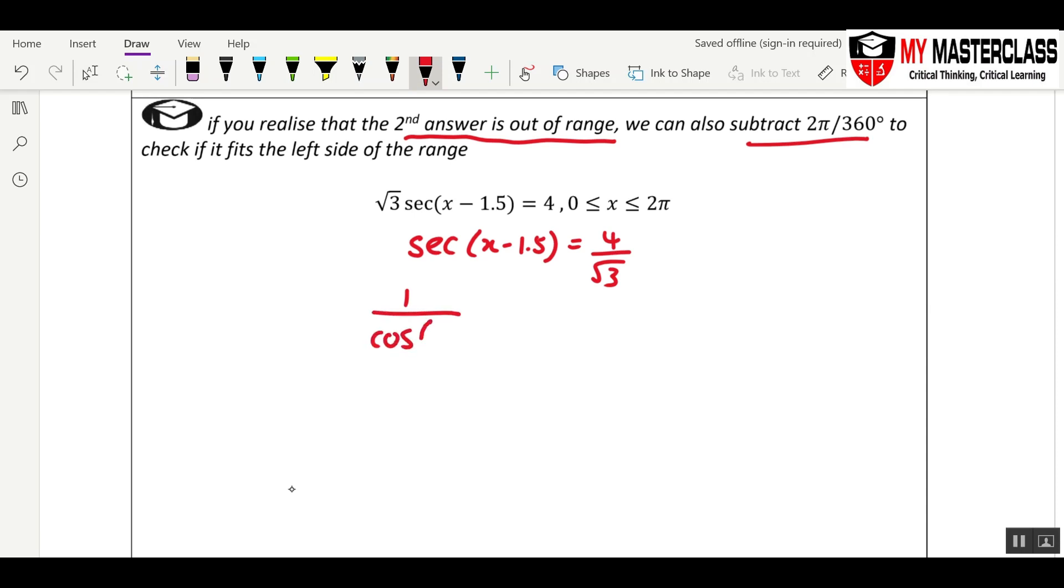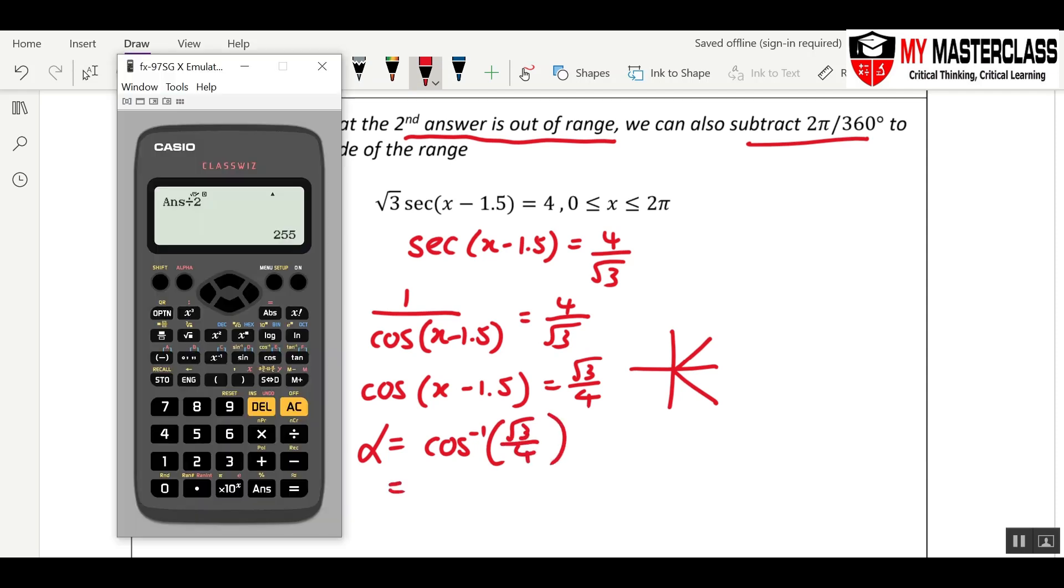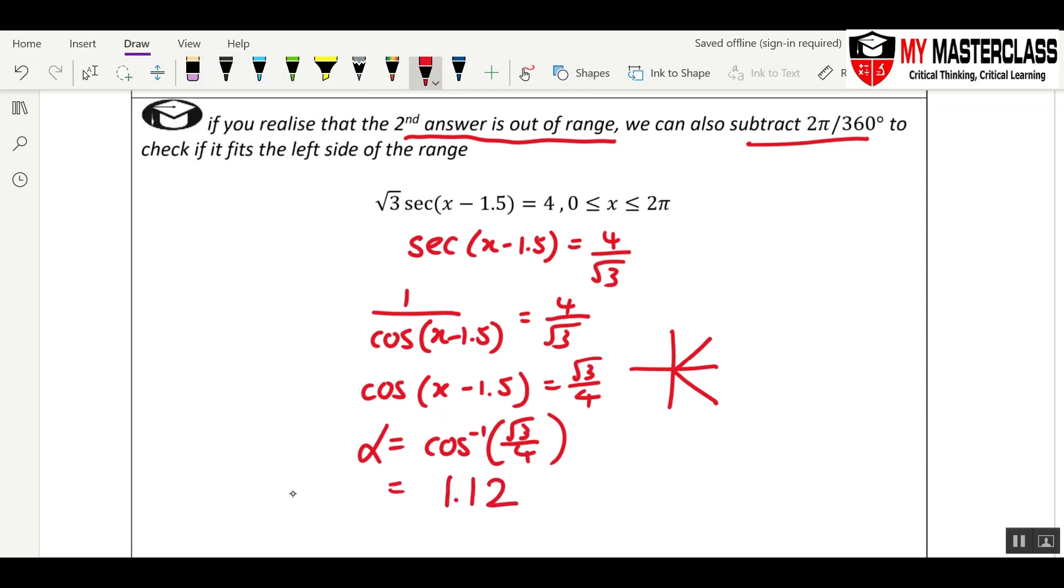This means that 1/cos(x - 1.5) = 4/√3, so cos(x - 1.5) = √3/4. Same thing: this is in the first quadrant and the fourth quadrant. Basic angle equals inverse cosine √3/4, and that will be—remember to change your calculator to the correct mode. In the exam, if your calculator is in the wrong mode, then the whole thing will be wrong. There will be no error carry forward. Cosine inverse √3/4 is going to be 1.122.